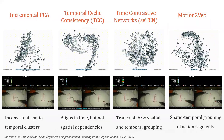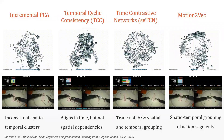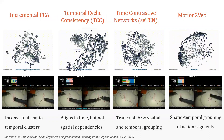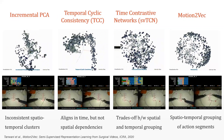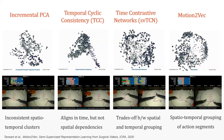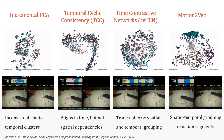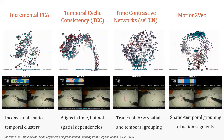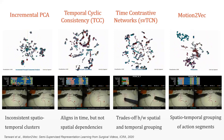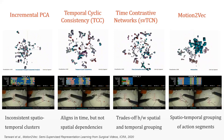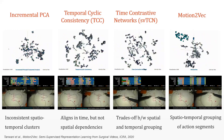Here we qualitatively compare the Motion-to-Vec embeddings with incremental PCA, TCC, and SVTCN. We observe that incremental PCA gives inconsistent spatiotemporal clusters. TCC aligns in time but ignores spatial dependencies. Single-view TCN trades off between spatial and temporal grouping by picking a positive example in the temporal neighborhood of the anchor example. Whereas Motion-to-Vec preserves the spatiotemporal grouping of the action segments in the videos.